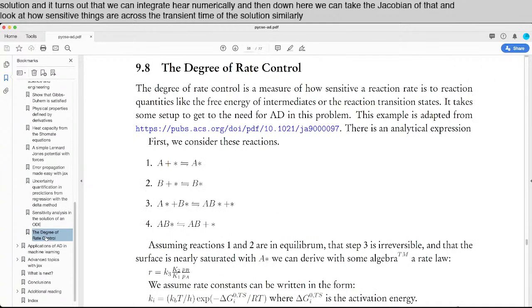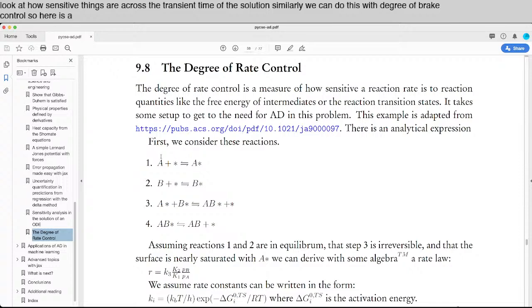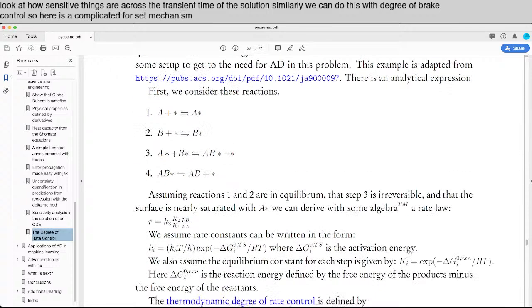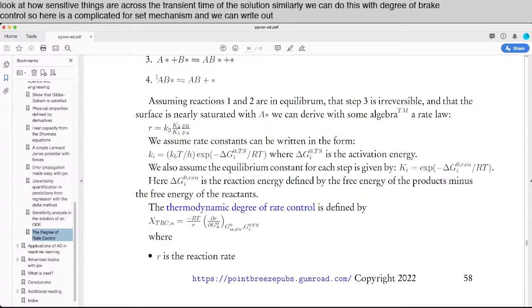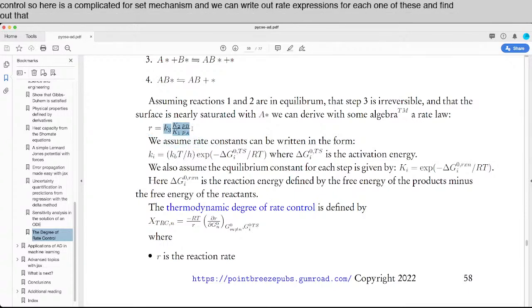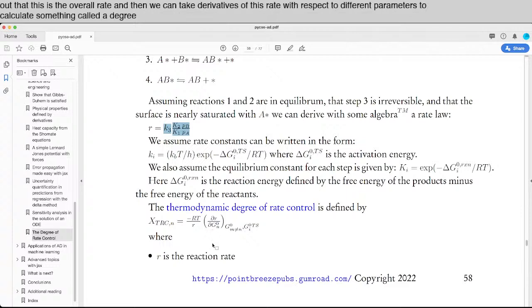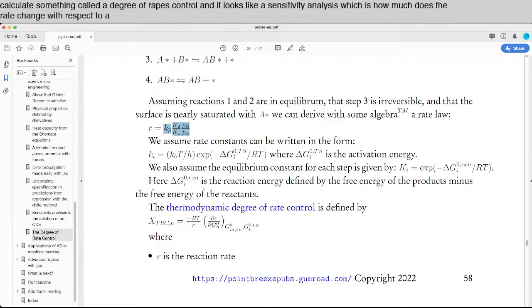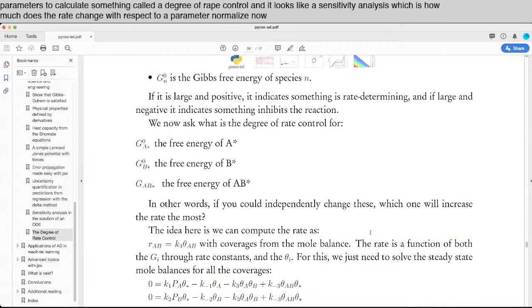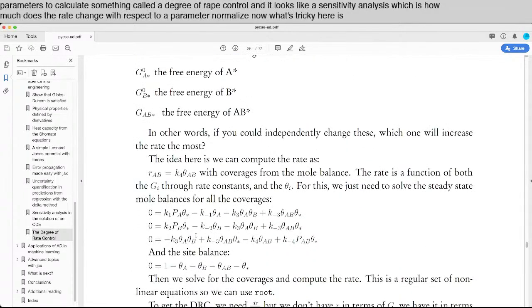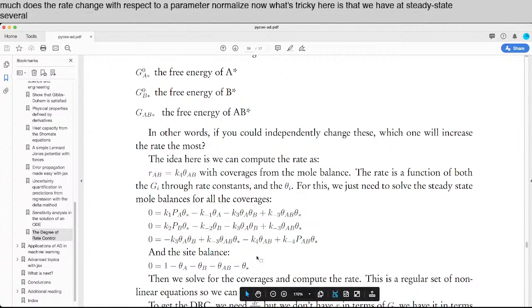Similarly, we can do this with degree of rate control. So here is a complicated four-step mechanism and we can write out rate expressions for each one of these and find out that this is the overall rate. And then we can take derivatives of this rate with respect to different parameters to calculate something called a degree of rate control. And it looks like a sensitivity analysis, which is how much does the rate change with respect to a parameter normalized by the rate. Now what's tricky here is that we have at steady state several equations, four equations, and we have to calculate what are the thetas.